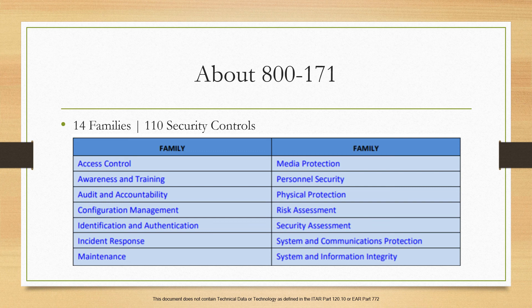We'll start at the top of the list with access control. Very similar to any other NIST or security publication out there, it's really all about who is authorized to view your data — specific to CUI and those boundaries. There's a total of 22 controls within this family in NIST 800-171. It's all about who's authorized to see the data and whether there are appropriate permissions set up.